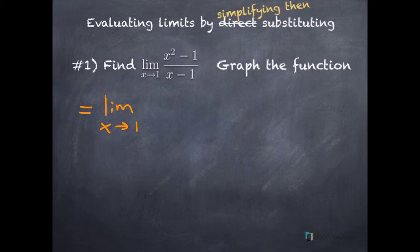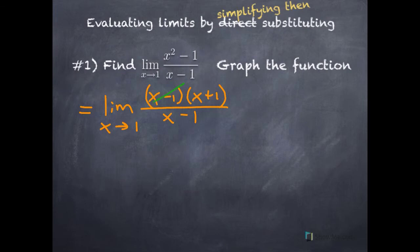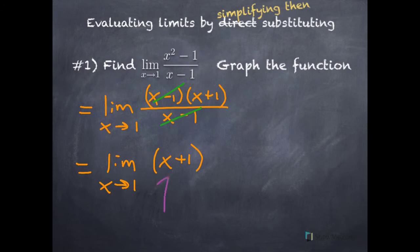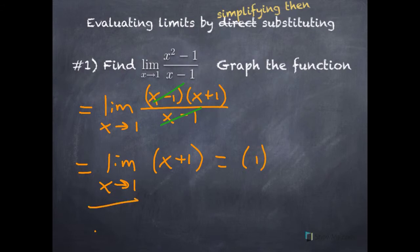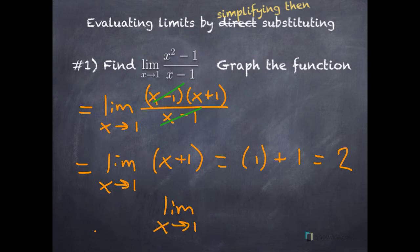Our numerator factors — it's the difference of perfect squares — so x minus 1 and x plus 1. Our denominator is already simplified. We can divide the numerator and denominator by x minus 1, leaving us with the limit as x approaches 1 of (x plus 1). If your function is more than one term, you must put the whole function in parentheses. Now let's substitute: replace x with 1, giving us 1 plus 1, which equals 2. This limit does exist — by simplifying first and then substituting, we found that this limit does exist.